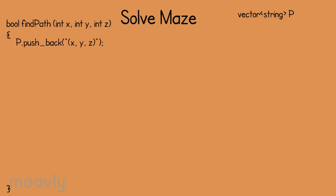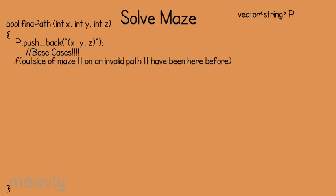We will return p at the end of the solveMaze function. We'll want to start by adding a string representation of x, y, and z to p, our vector of strings. Then, like all good recursive functions, findPath should have a few base cases. Let's think about them for a moment. When would we not want to continue looking on our current path for the end of the maze? Perhaps if we're outside of the maze, are on an invalid path, or we've already been to this spot in our maze before.